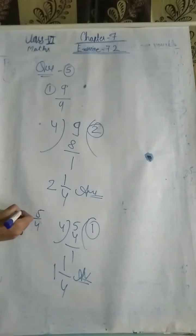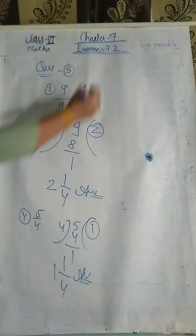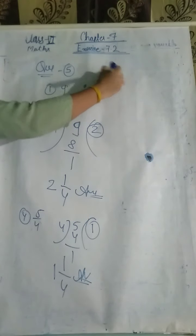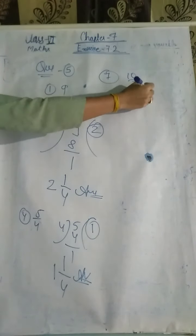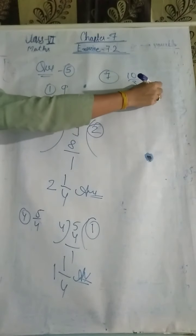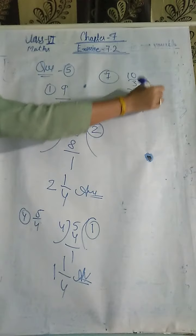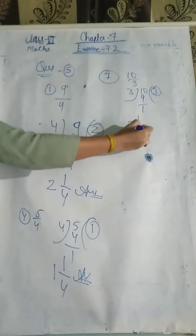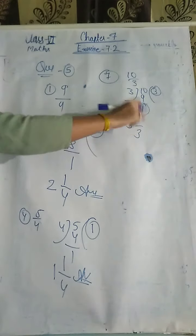This is question number 4. Now question 1: it is written as 10 upon 3. Divide 10 by 3: 3 threes are 9, remaining 1. Quotient goes in the middle, remainder becomes the numerator, and denominator stays as 3. So the answer is 3 and 1 upon 3.